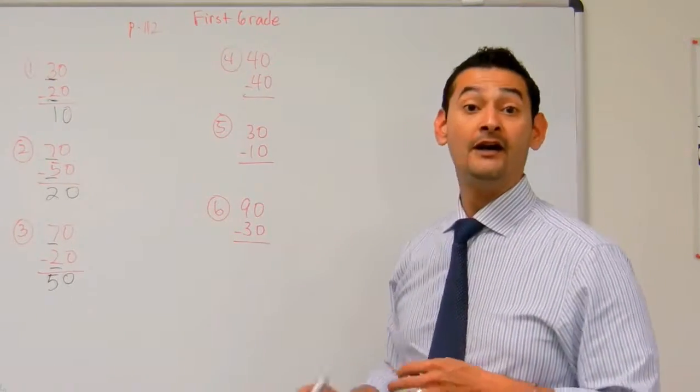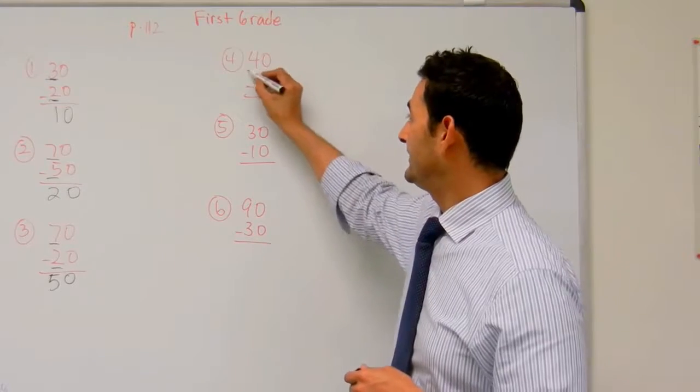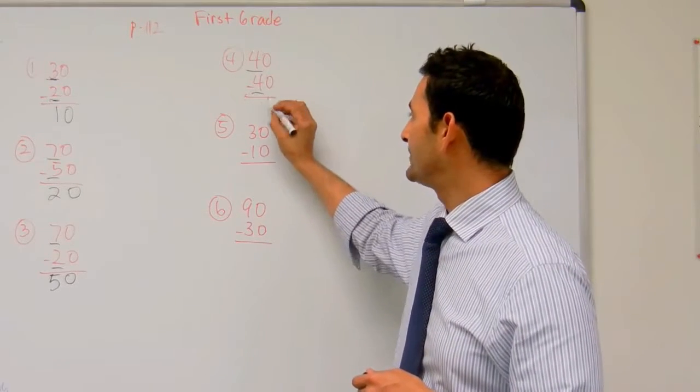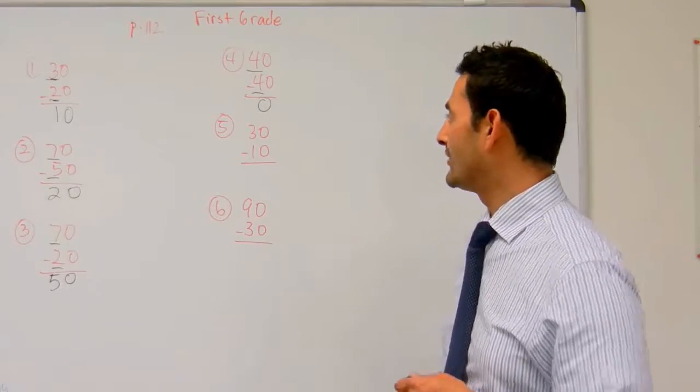Now let's take a look at number 4. 40 minus 40, look at the tens place. 4 minus 4 is 0, 0 minus 0 is 0, 40 minus 40 is 0.